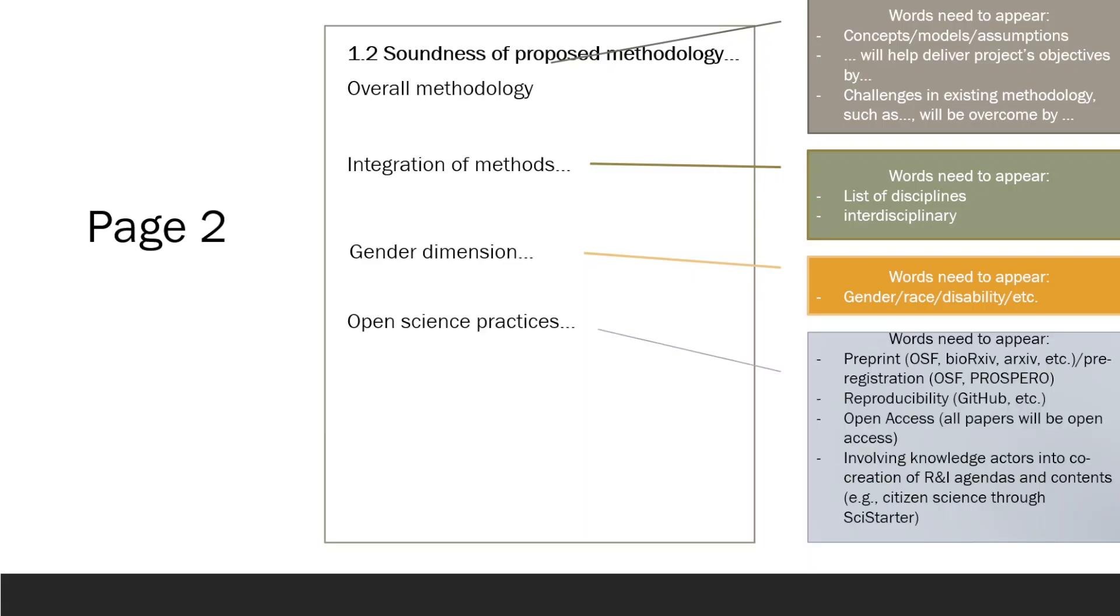Explain that research outputs will be made available as preprints. Mention one of the preprint servers. Discuss the Prospero Registry if it is relevant to your project. Additionally, mention reproducibility, such as making code accessible through GitHub if applicable. Assert that all publications will be open access and, if possible, mention the involvement of knowledge actors in research, for instance, talk about citizen science through SciStarter, if it applies to your project.